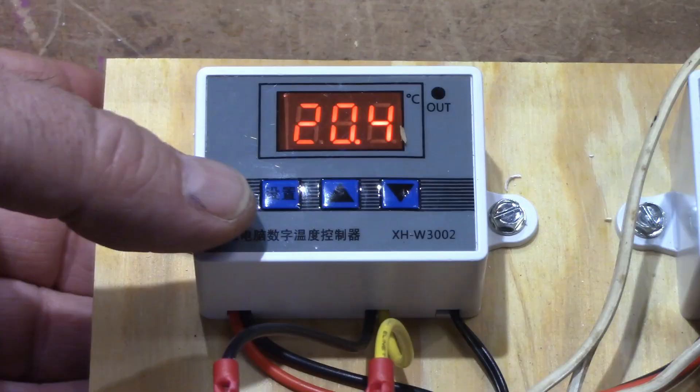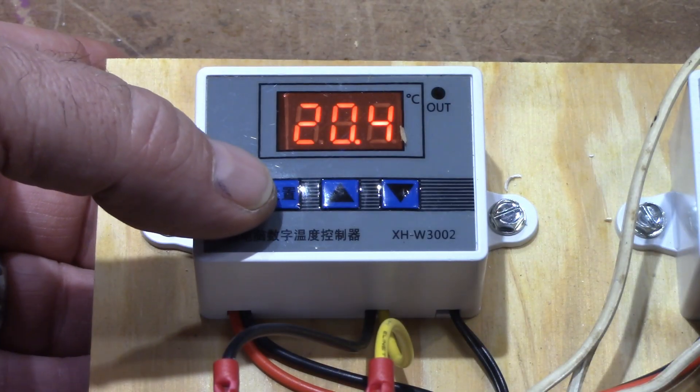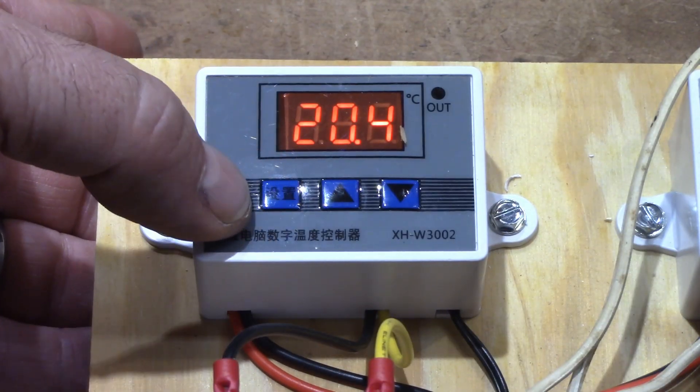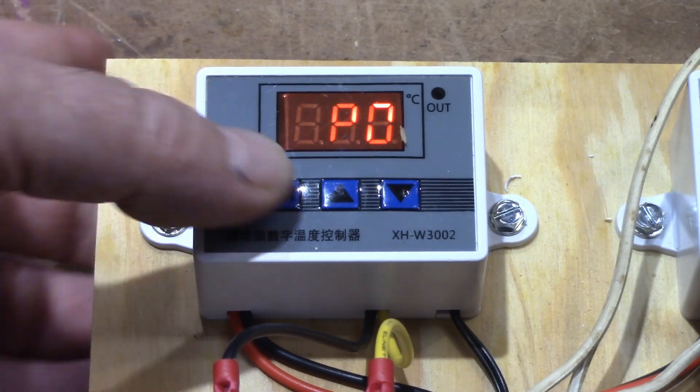Let me show you how to program these. So you hit this first button. It's not labeled anything, at least in English, it's got some kind of Chinese writing on it. You push this and it says PO.